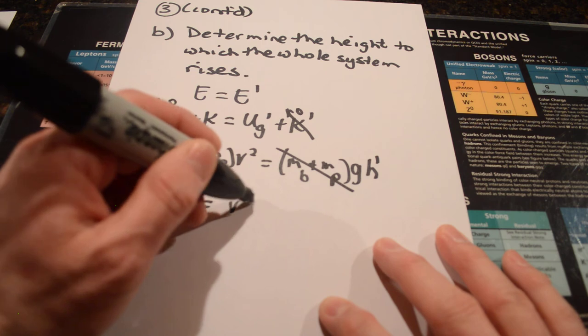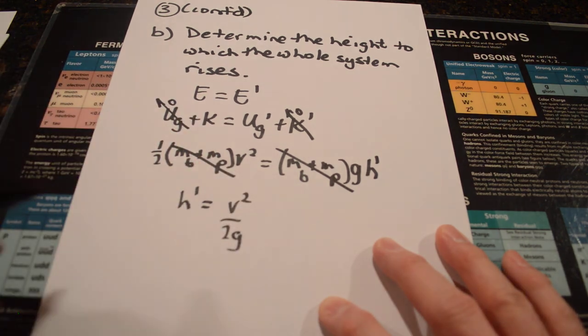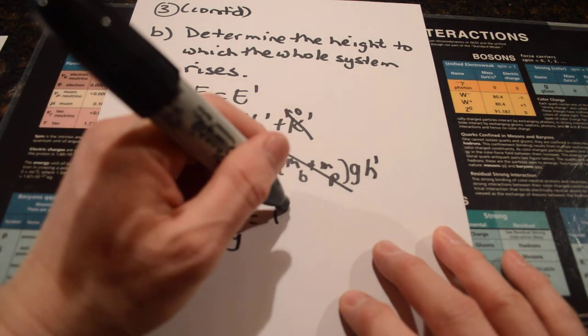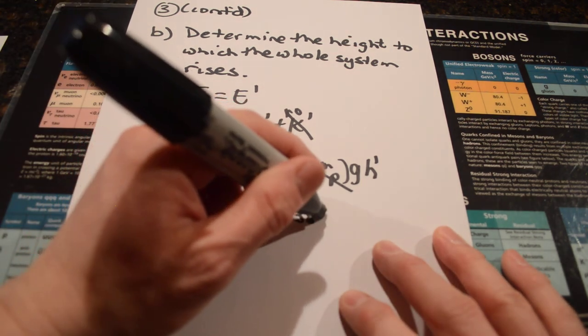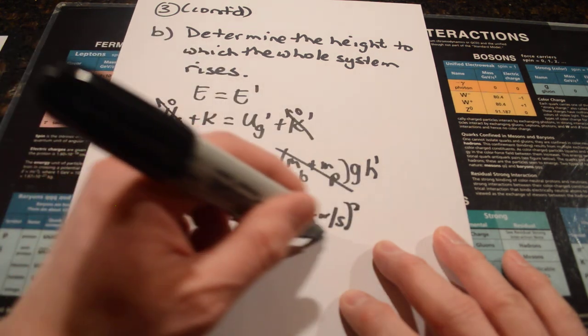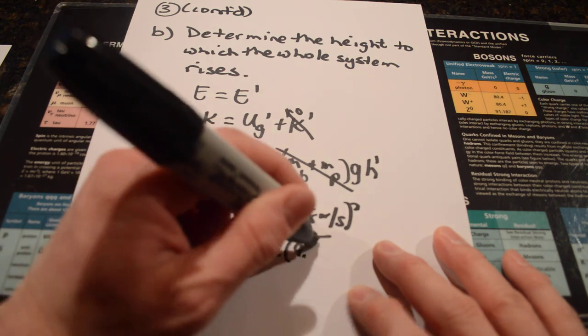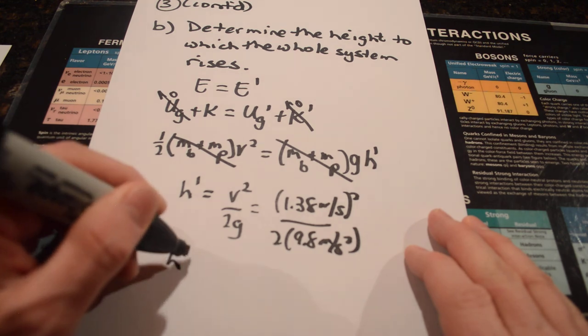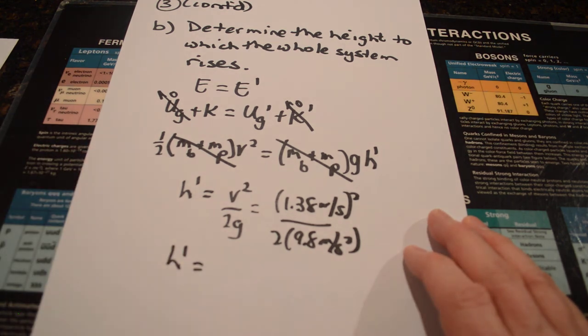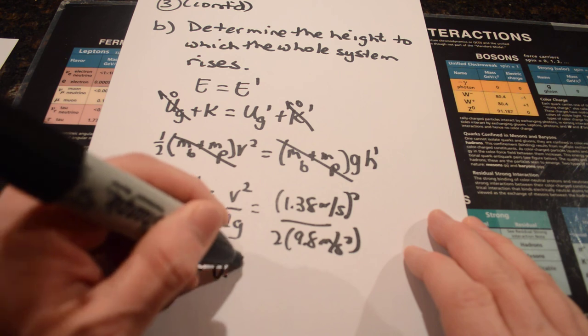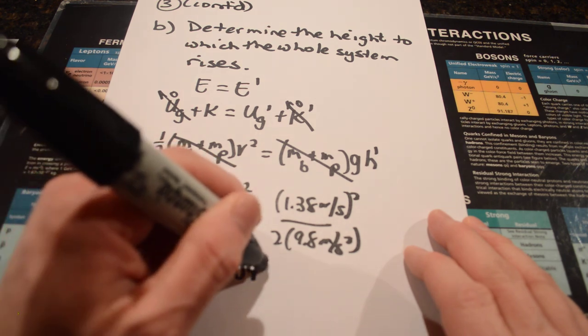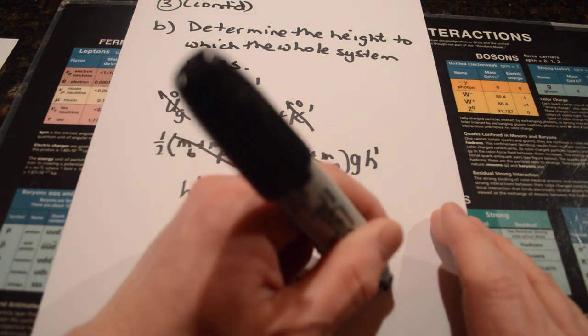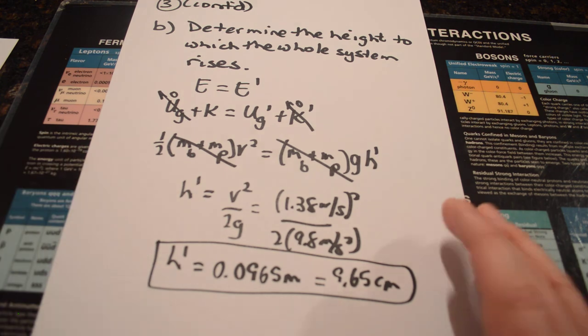And so, what we're going to do is just find the height. That's just going to be v squared over two times the acceleration due to gravity. v was what we got in the first part, 1.38 meters per second. And we're going to square that and then divide by two times 9.8 meters per second squared. You can probably see how the units are going to cancel, and it's going to end up with a height in meters, and that ends up being 0.0965 meters, which is the same as 9.65 centimeters. So, that's the answer to that problem.